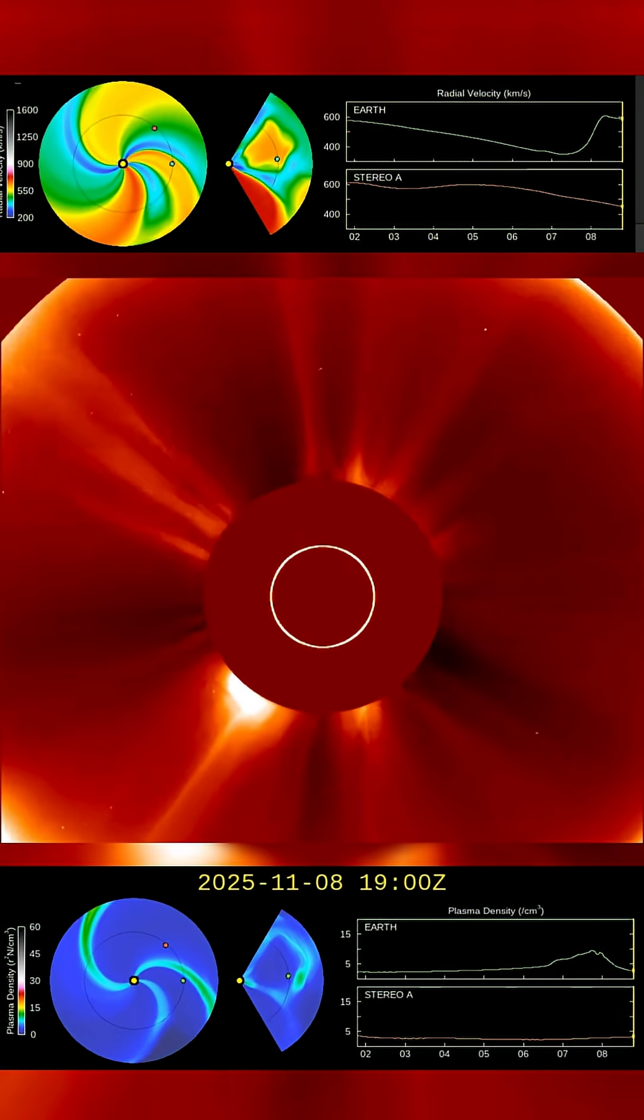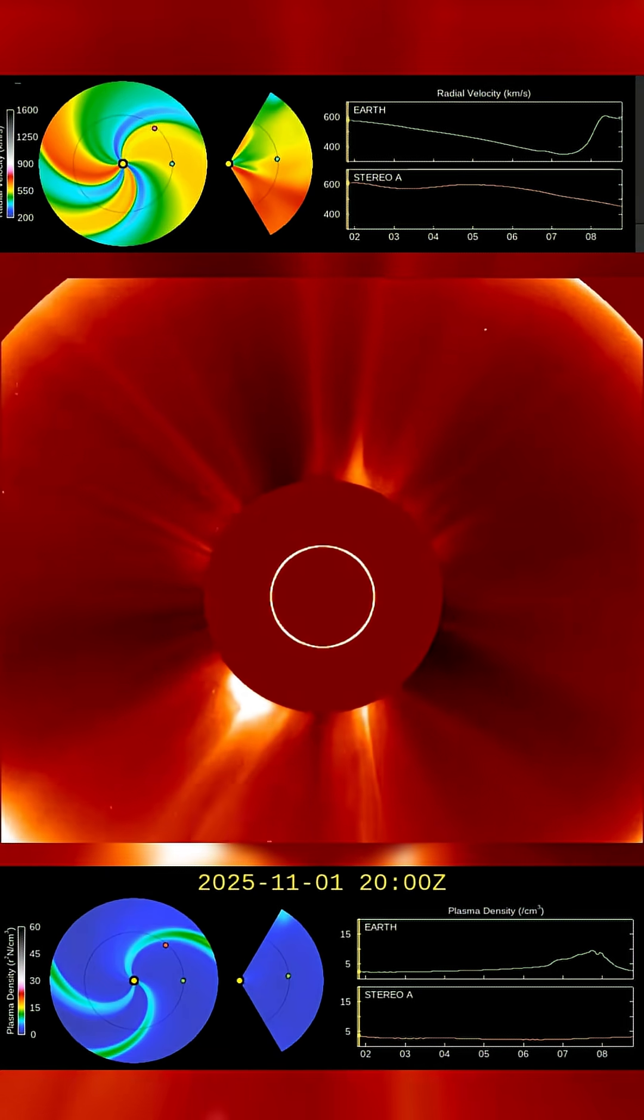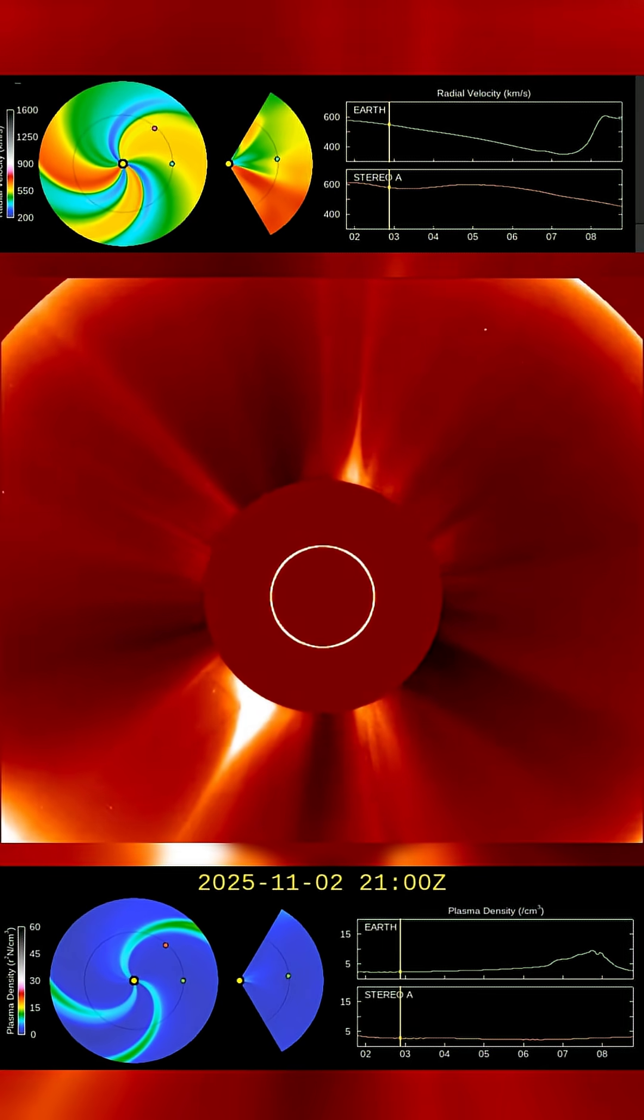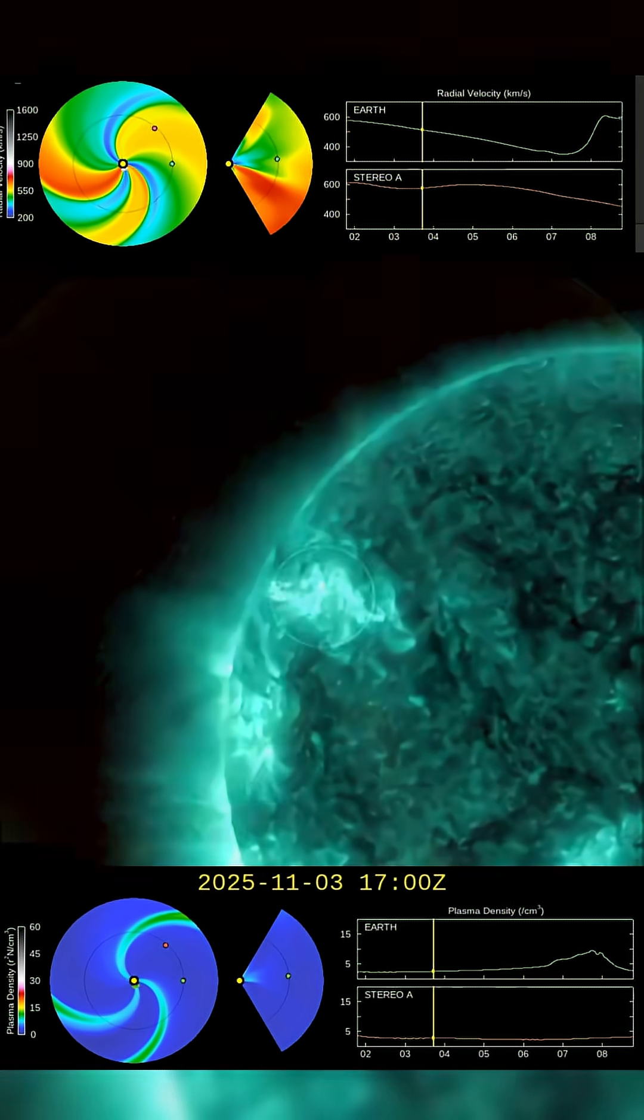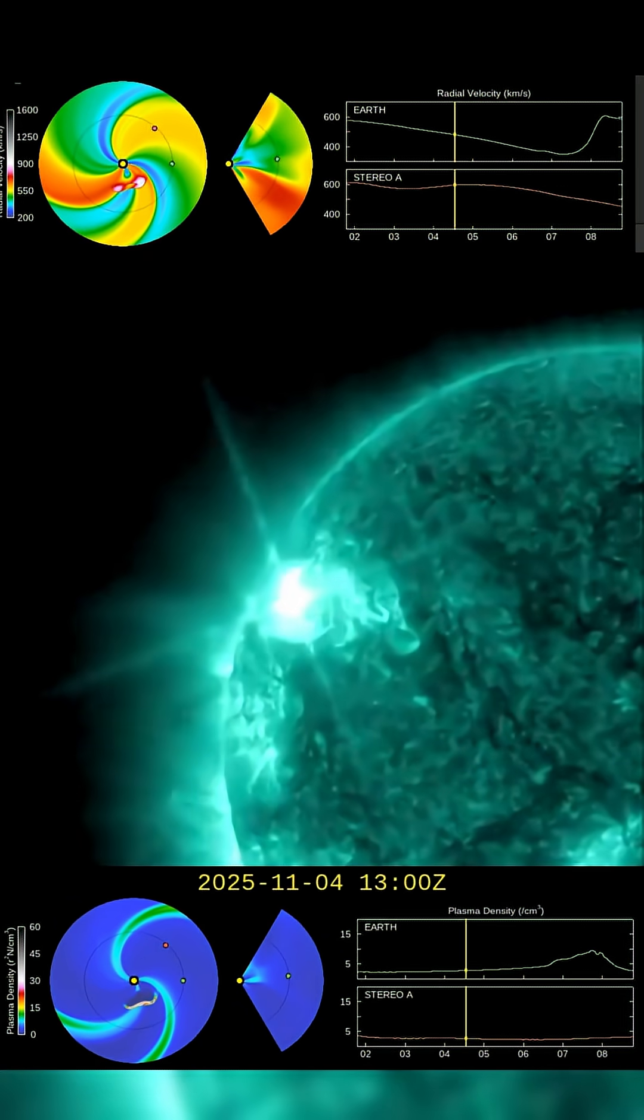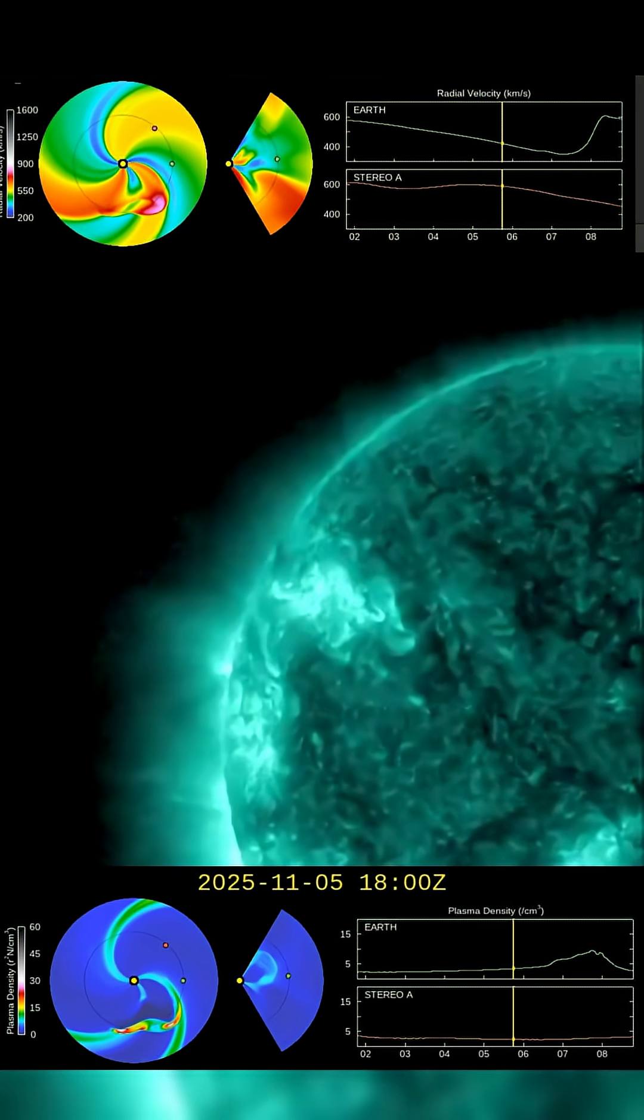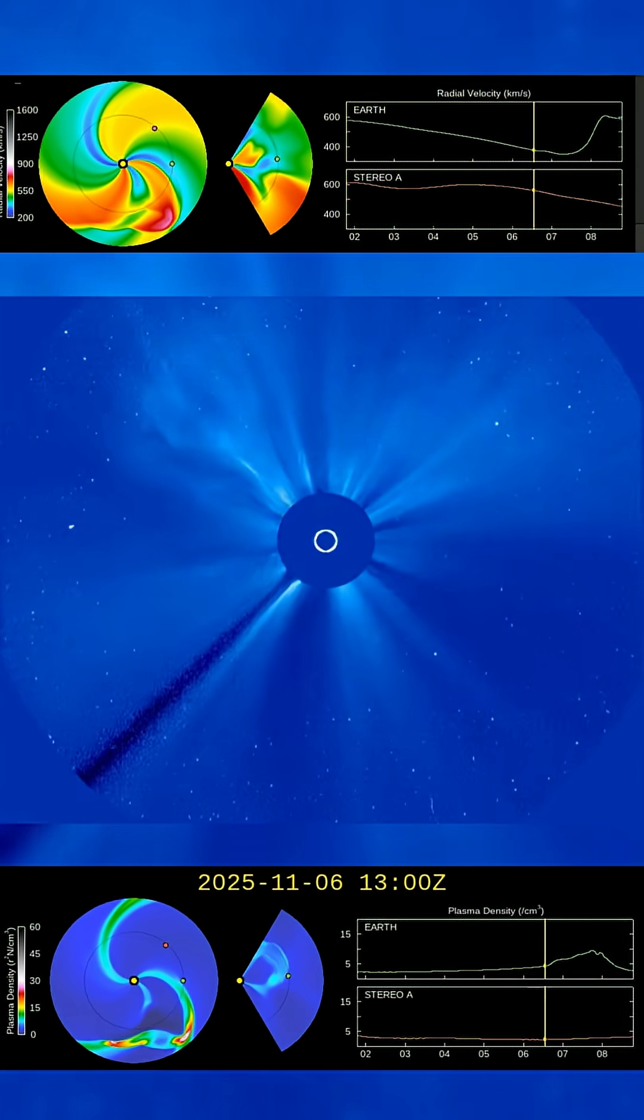It follows a string of smaller M-class and C-class flares earlier in the day. Initial reports show shortwave radio blackouts across parts of the daylight side of Earth shortly after the eruption. Scientists are still analyzing satellite data to see if a coronal mass ejection was launched toward Earth.